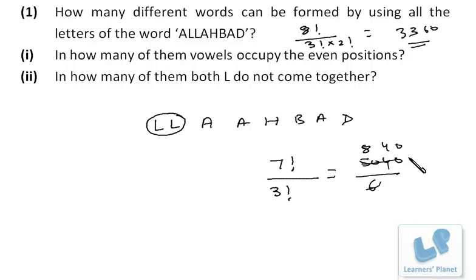These are the total number of ways, and these are the number of ways when both L's are together. In the remaining ways, the 2 L's will not be together. So it's 3360 - 840, which equals 2520. I hope you are clear.